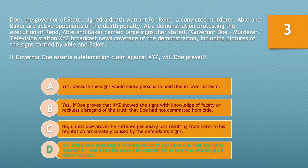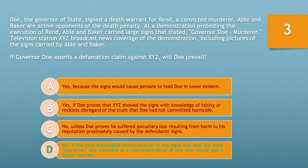Here, XYZ broadcast news coverage of a demonstration, including pictures of signs carried by Abel and Baker stating 'Governor Doe, murderer.' A reasonable viewer of the broadcast would not conclude these signs were alleging Governor Doe was guilty of a criminal offense. The broadcast was covered as part of a demonstration and in that context it was obvious the signs were intended as a critique of Governor Doe's death penalty policy. Therefore, Governor Doe will not prevail on his defamation claim against XYZ.